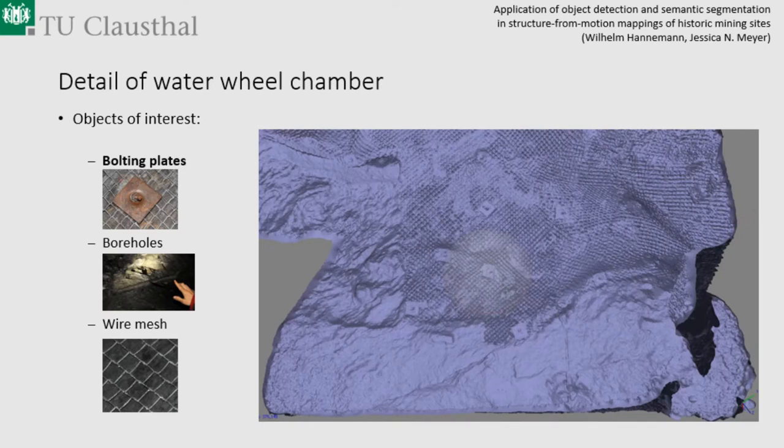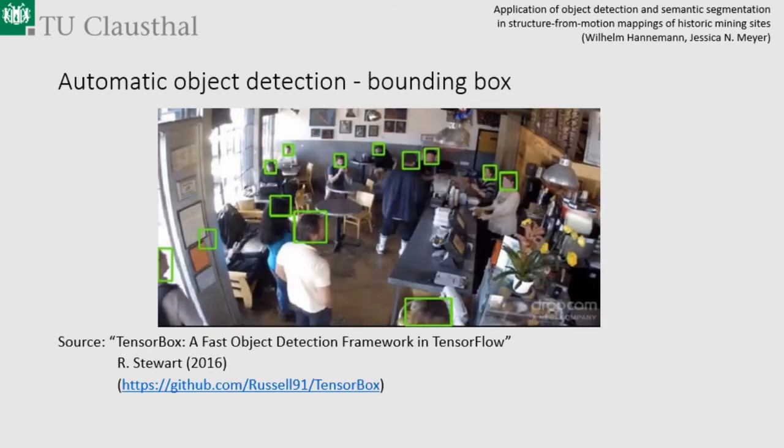The archaeologists wanted to look at this face wall and detect tool marks and cavities where wooden constructions had been in former years, to get an idea of what this room was used for during several periods. To help with this, we played around as a side project with object detection.